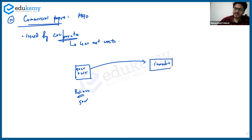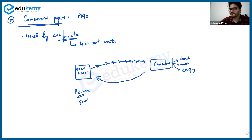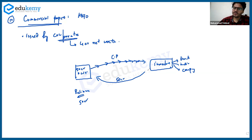The investors can be a bank, an individual, or another company — anybody. Reliance issues this commercial paper to these investors, and in return the investors give Reliance the money. So Reliance gets 50 crore and gives a commercial paper in return.